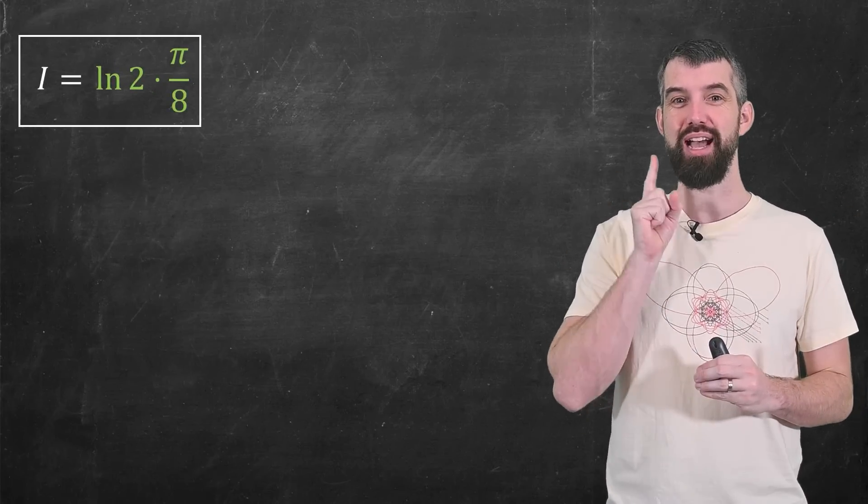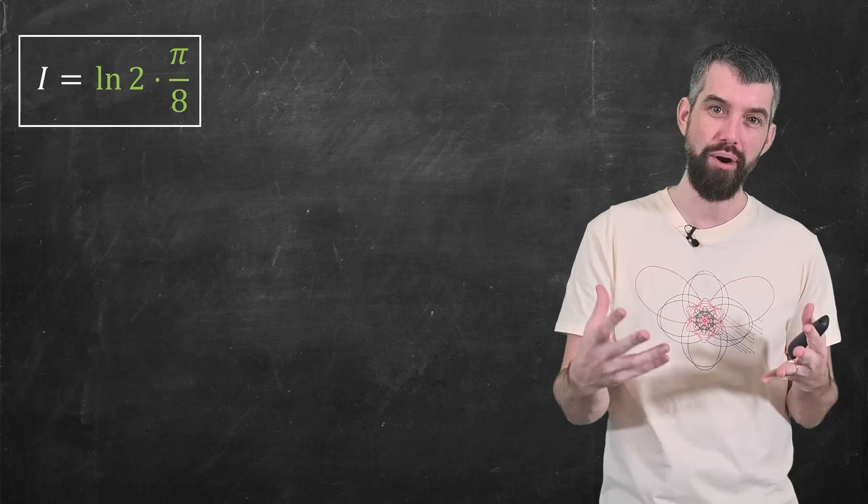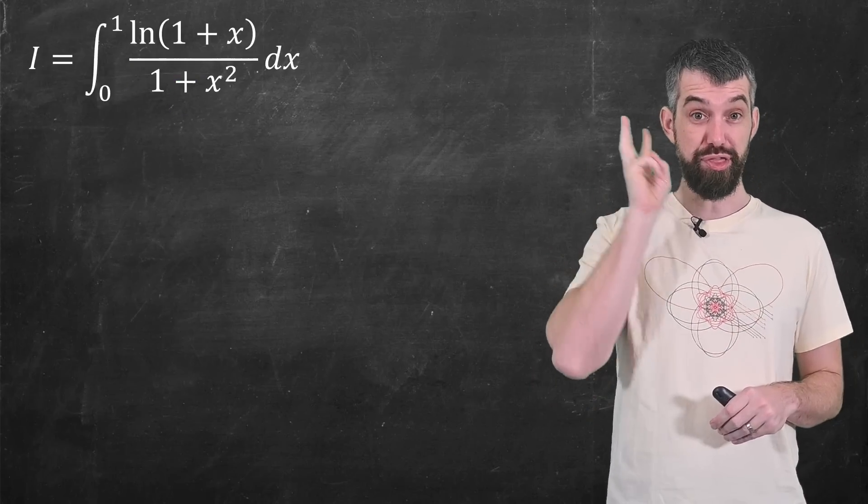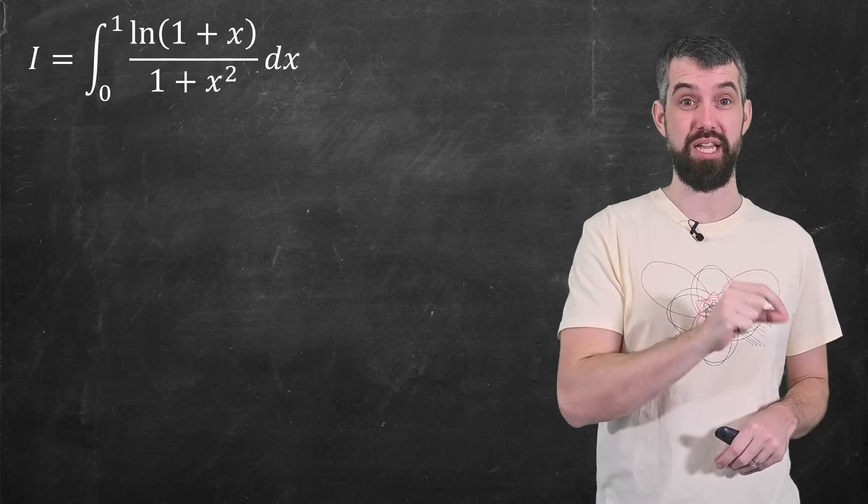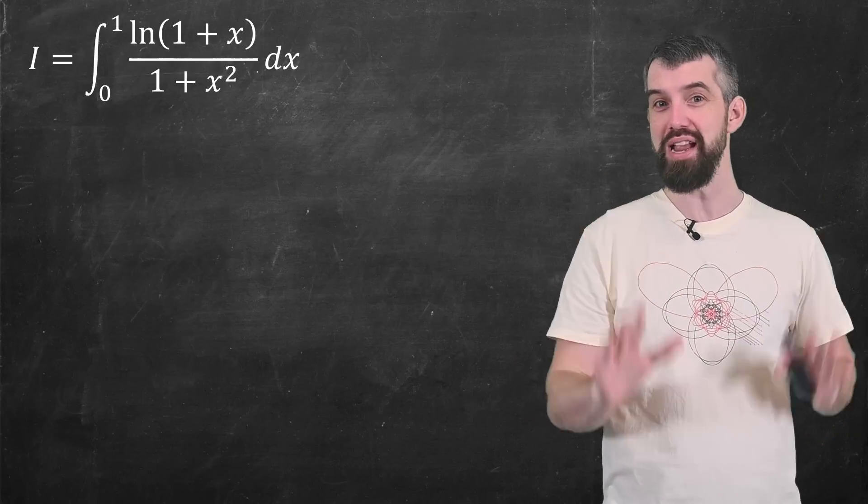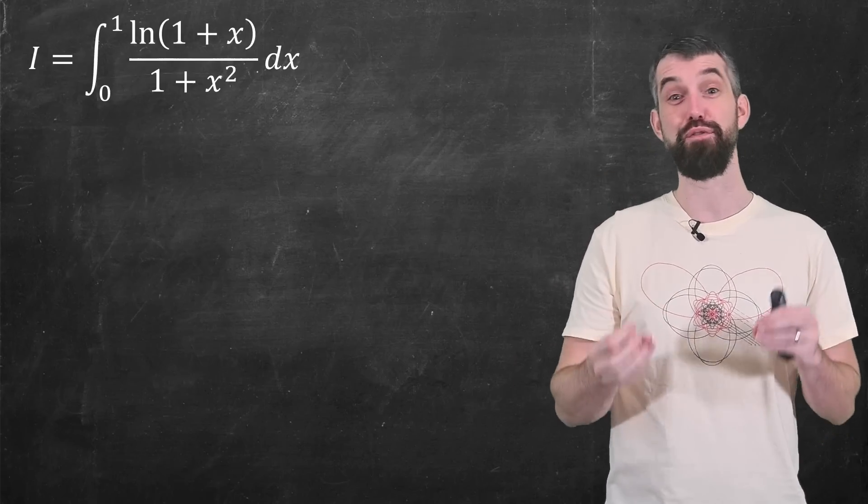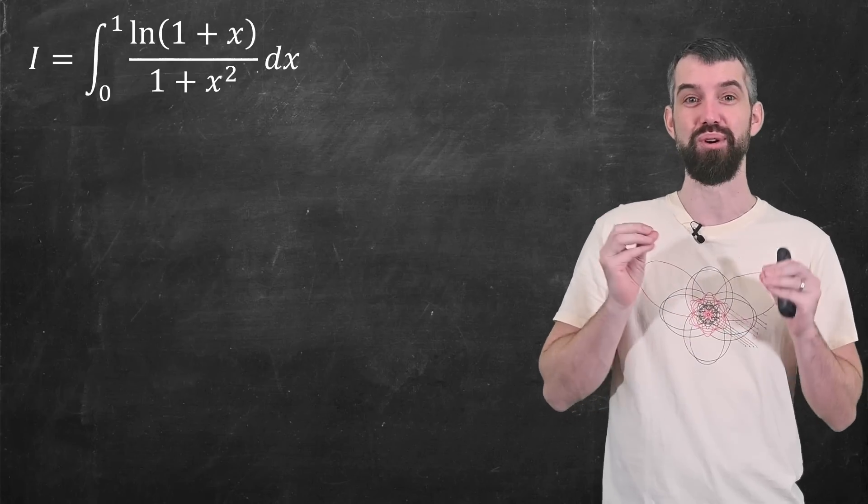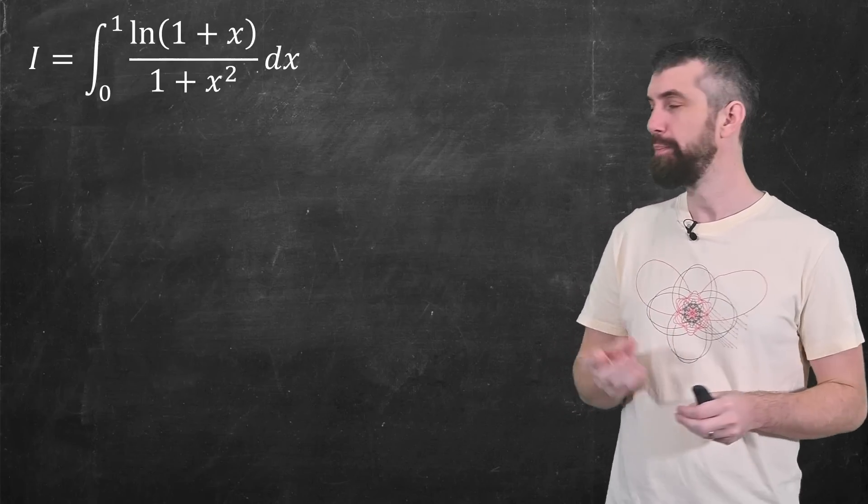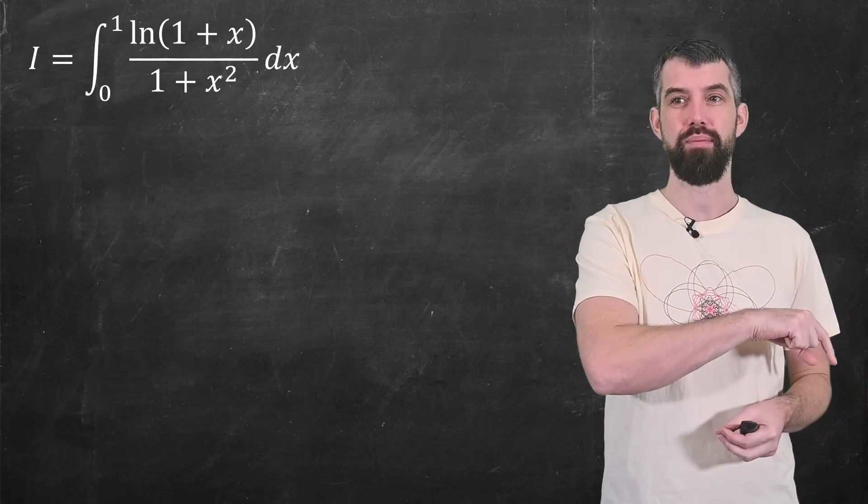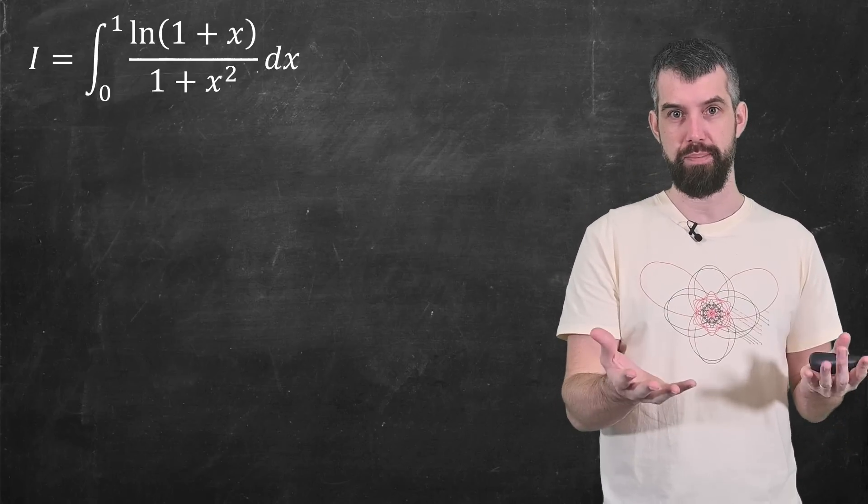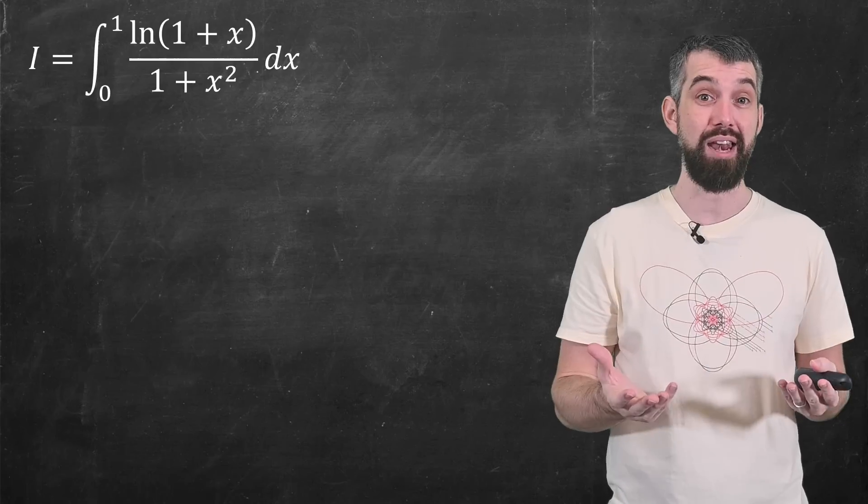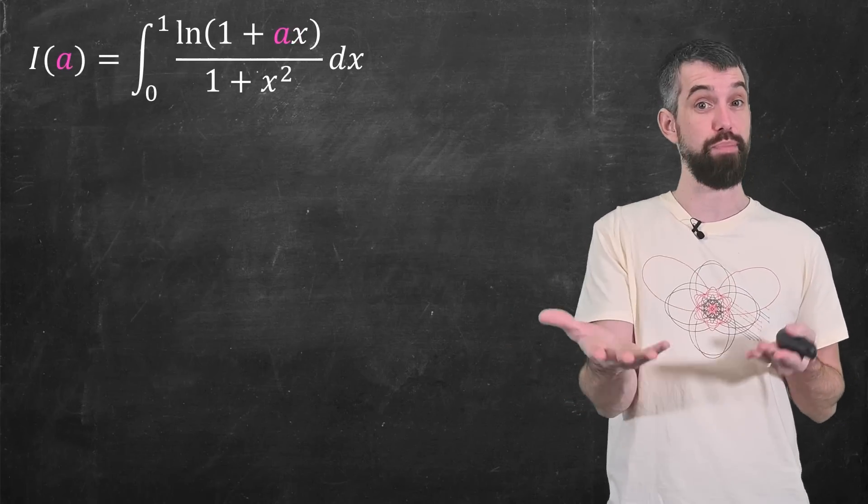The same answer as before. So this sort of shows the power of taking a single integral and making it into a double integral. Third method for solving this particular integral. This is called Feynman's trick. I've done a couple videos before on Feynman's trick. I really think it's a super-powered integral technique. Basically, the idea is i here is a number. Whatever this is, it's some number. But I could introduce a parameter a and make this now a function of that parameter a.